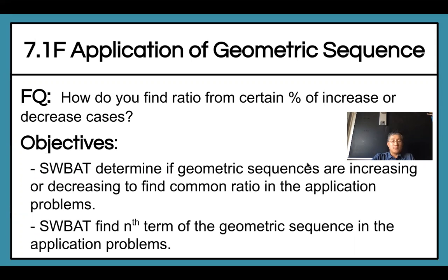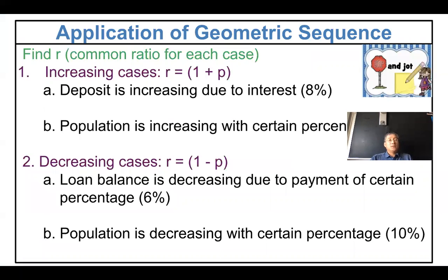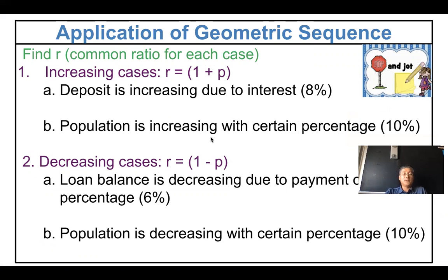We learned how to find the common ratio before — when certain things increase or decrease by a percentage, the common ratio r equals one plus the percentage. For example, a deposit increasing due to 8% interest, a population increasing by 13% or 10%. When it is decreasing, r equals one minus the percentage — like a loan balance or population decreasing.